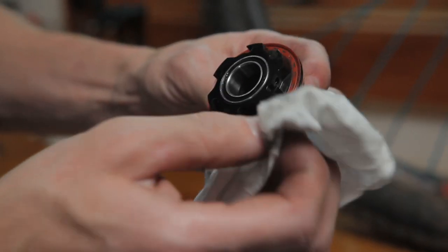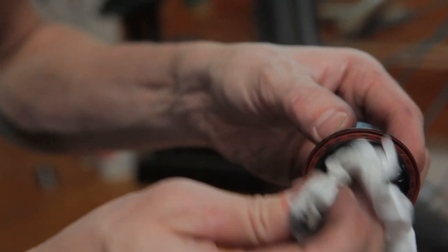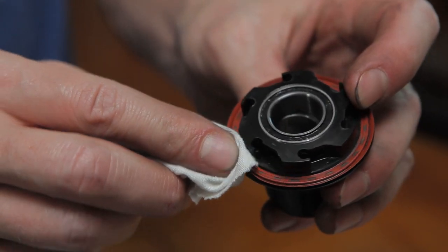Once your pawls and springs are out of the way, use a rag to clean the driver body and main seal. Inspect the seal for any warping or damage.